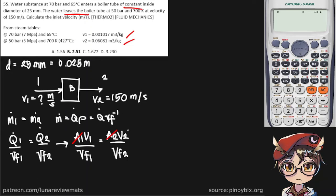And we are given the exit velocity already, as well as the two specific volumes, so now we have everything we need to find the inlet velocity. So the inlet velocity is simply the initial specific volume multiplied by the exit velocity divided by the exit specific volume.